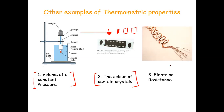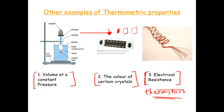The third and fourth thermometric properties include electrical resistance — it gets harder for current to flow through a wire at higher temperatures. Thermistors, or heat-dependent resistors, are a key example: their resistance changes with temperature and they're used in devices like immersion heaters and kettles.